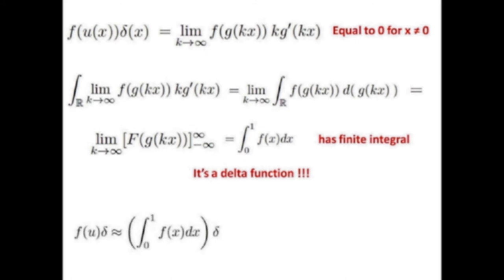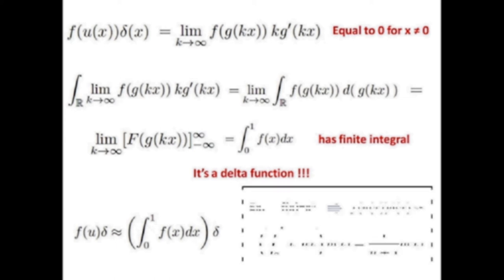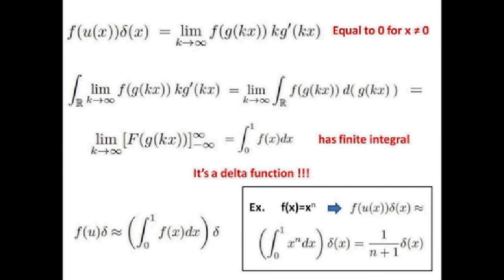This is a finite integral, so our distribution is 0 for every x ≠ 0 and has a finite integral — it is a delta function. We can say that f(u) times delta can be associated to a delta function of amplitude equal to the integral from 0 to 1 of f(x) dx. If we set f(x) = x^n, we recover Colombeau's result of amplitude 1/(n+1), so our formula is coherent with the established theory.